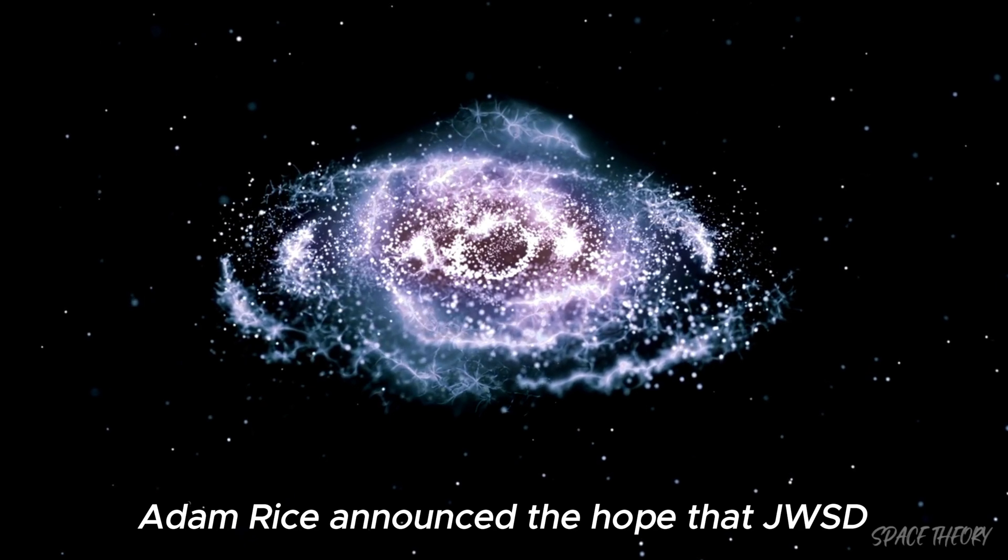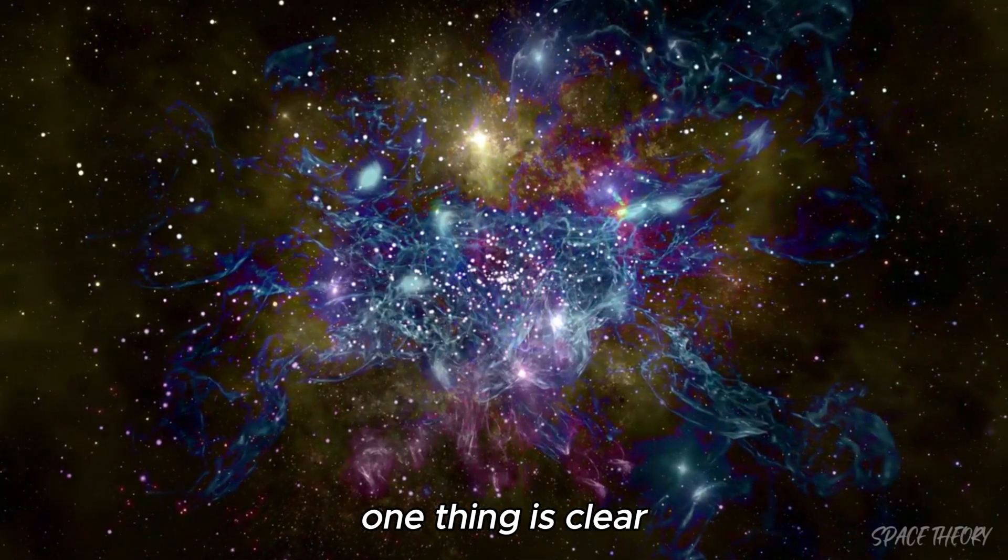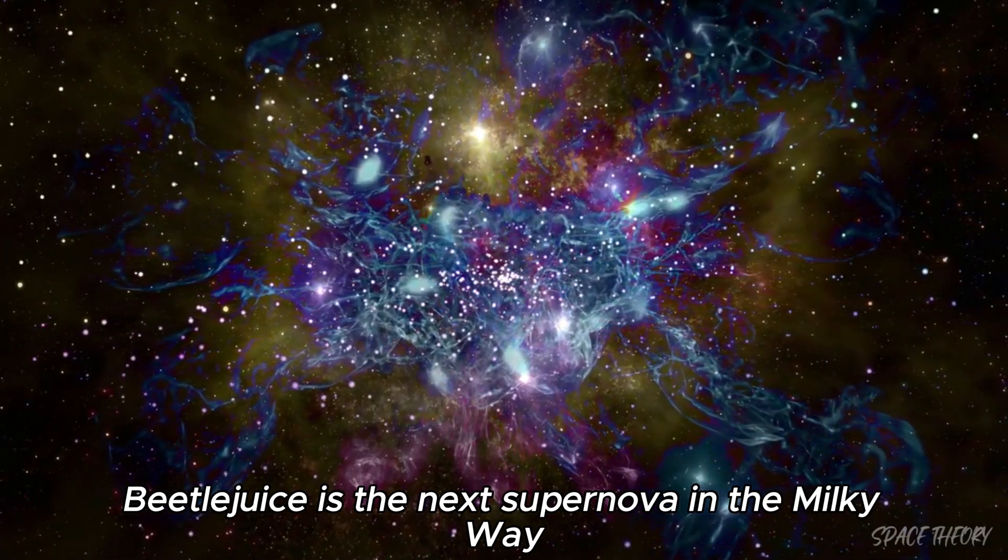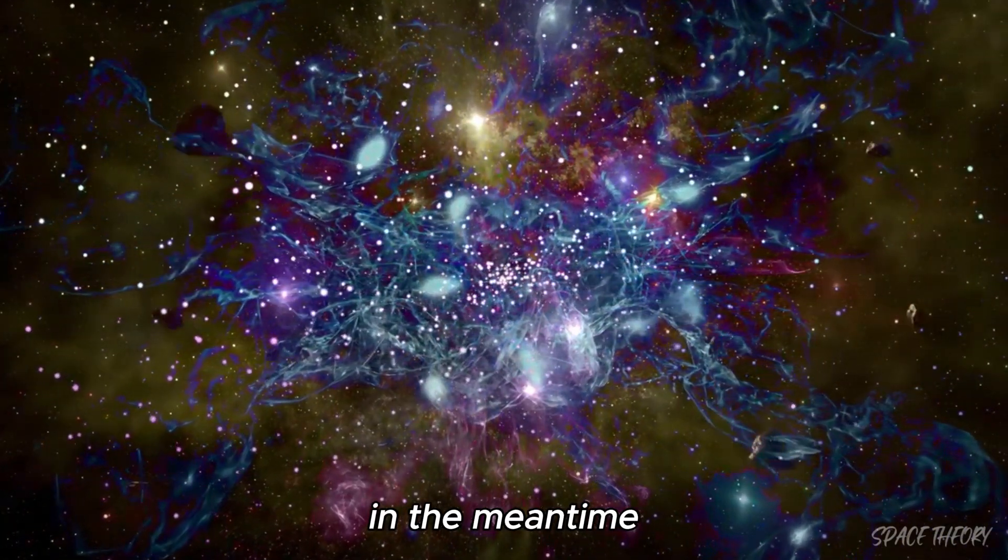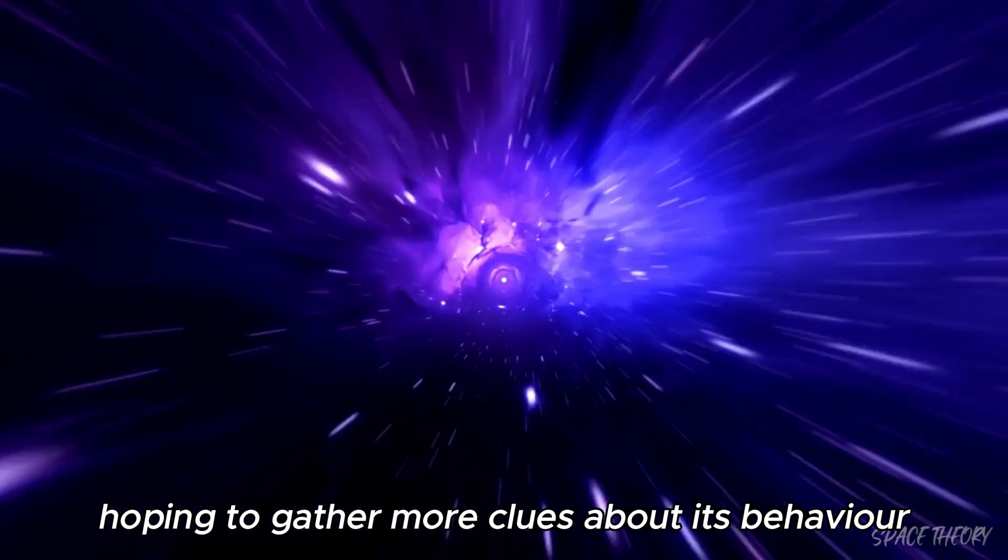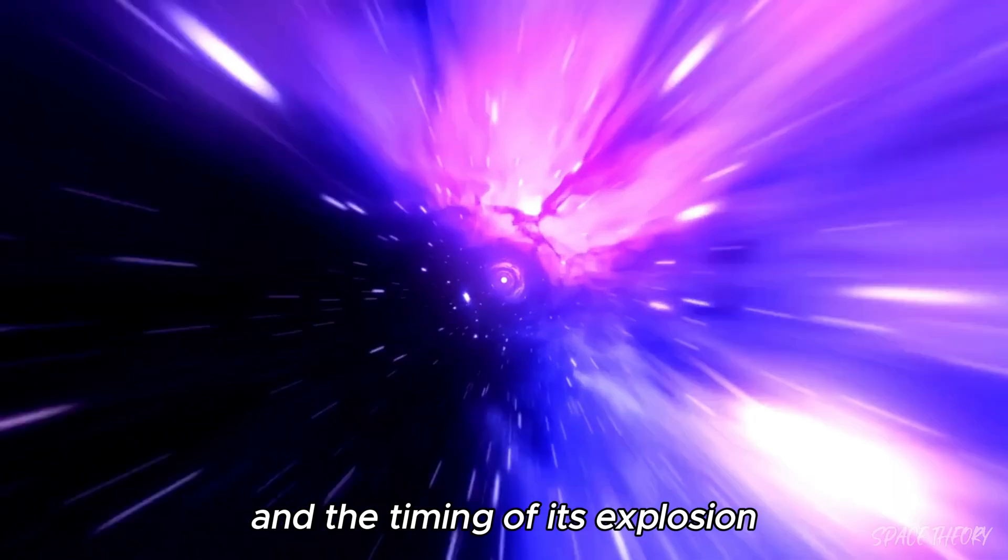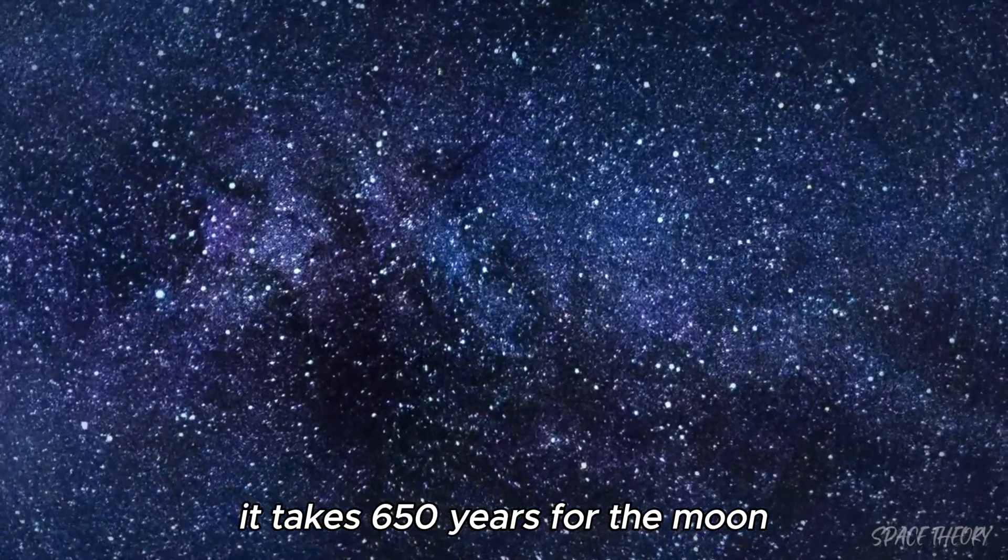But regardless of the timing, it takes 650 years for the light from the Betelgeuse supernova to reach Earth, meaning the explosion could have already happened and we haven't seen it yet. This is one of the biggest peculiarities of astronomy. When we look at the stars, we are looking back in time. The Betelgeuse light we see today began its journey to Earth 650 years ago, in the early days of the Renaissance.